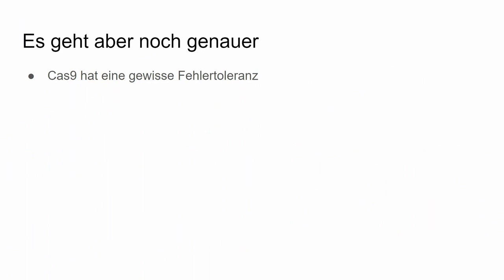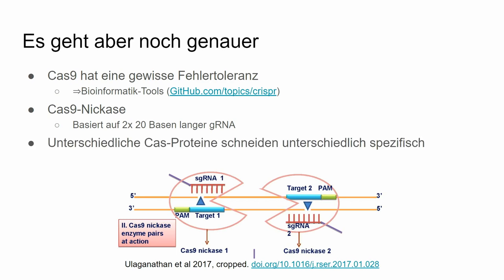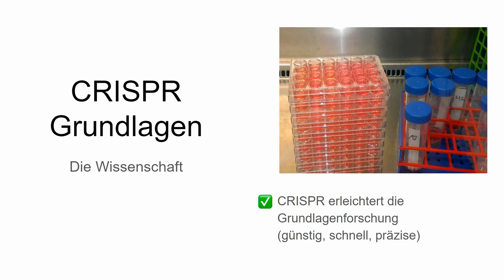People have thought about how to minimize off-target effects. Cas9 has a certain error tolerance, but you can use bioinformatics tools to find sequences that are as unique as possible. Or you can use Cas9-NICAS which needs two guide RNAs, giving a sequence size of 40 bases with a much lower probability of off-target effects. There are also different Cas proteins with different specificity, and anti-CRISPR proteins which deactivate CRISPR.